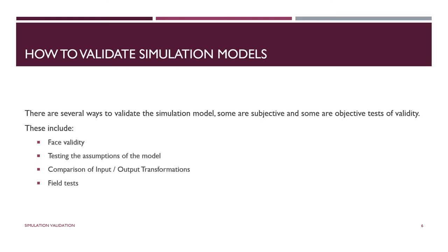There are a number of different ways to validate simulation models. We're going to look at a small number of these — the most important ones. Number one, we'll look at face validity, which is appropriate for many models. Testing the assumptions of the model is always a good way of validating. Comparing input-output transformations is kind of the gold standard if it's possible for you to do it. And then of course using field tests.